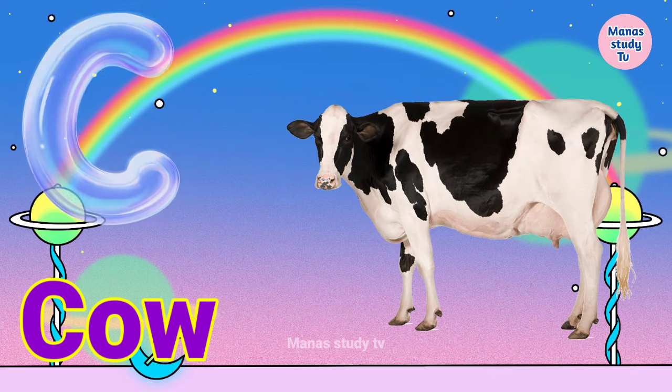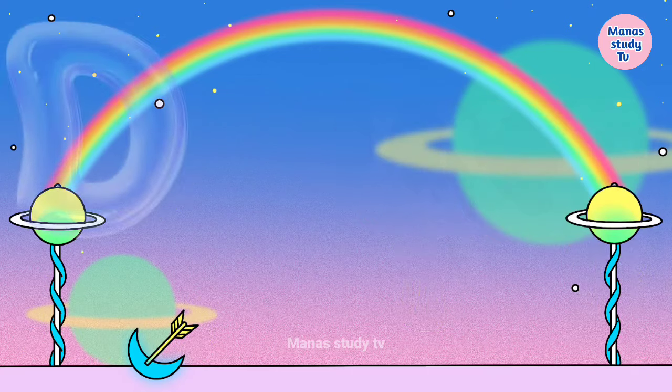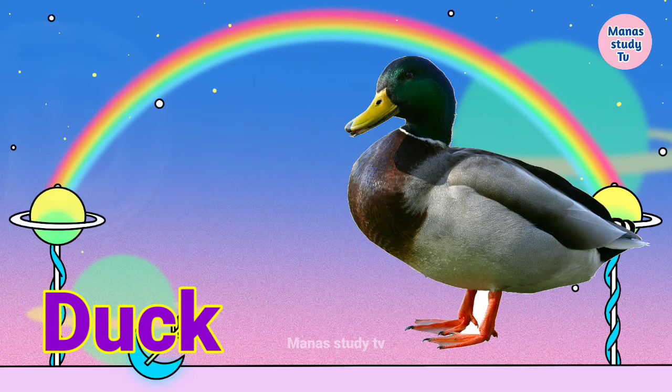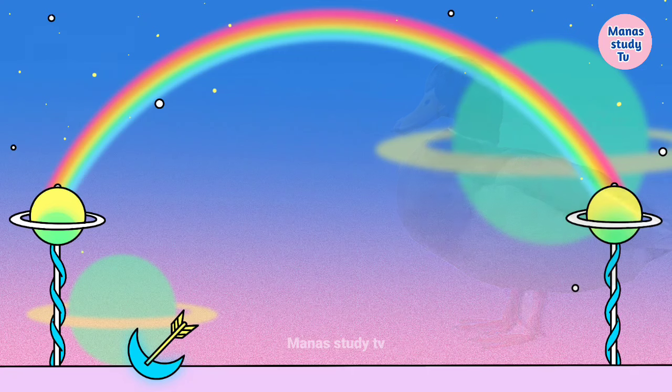C. C for cow, cow means guy. D. D for duck, duck means buttock.